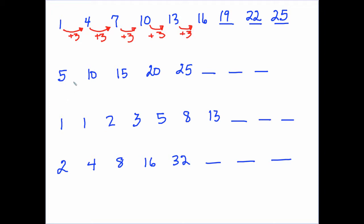In the next sequence the rule looks like we add 5: 5 to 10, 10 to 15, 15 to 20, 20 to 25. Extending the sequence is easy — we just add 5 to 25 and get 30, then 35, and then 40.